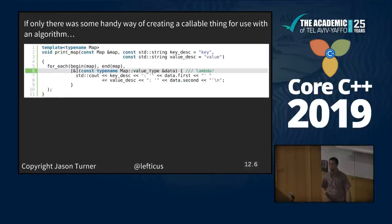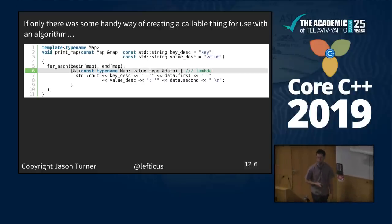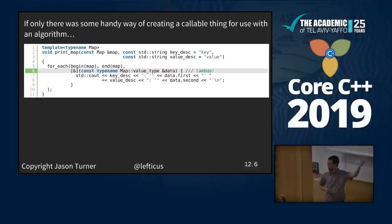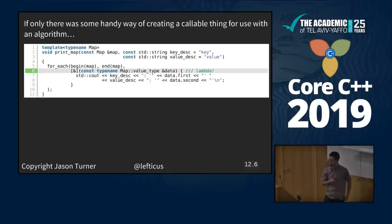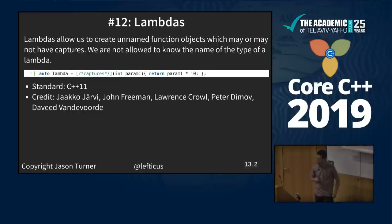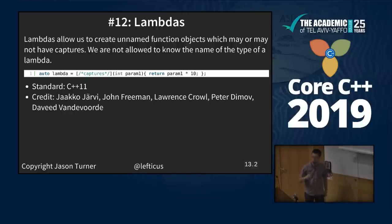If only there was some way to create a callable thing... Lambdas! We can use a lambda here — capturing by reference, taking a value_type parameter. This type name value_type is really nice. C++11. Lambdas allow us to create unnamed function objects that may or may not have captures. We are not allowed to know the name of the type of a lambda — that's where auto return type deduction helps us a lot.